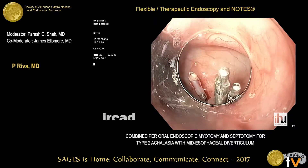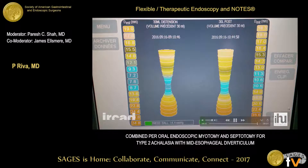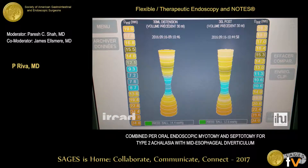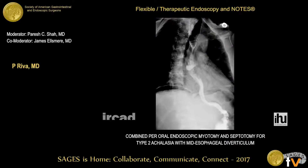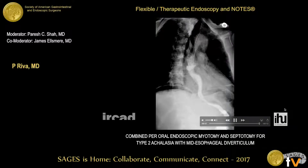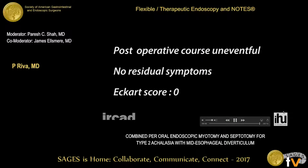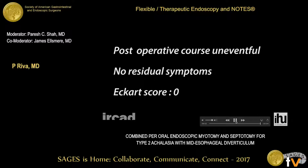The combined POEM and endoscopic septotomy approach proved to be safe and effective in treating this complex case. The EndoFLIP showed a 100% increase in distensibility and compliance after the myotomy. The upper GI series on postoperative day one showed good passage of contrast at the esophagogastric junction and better emptying of the diverticulum into the esophagus. The postoperative course was uneventful and the patient had no residual symptoms, with an Eckardt score of zero.